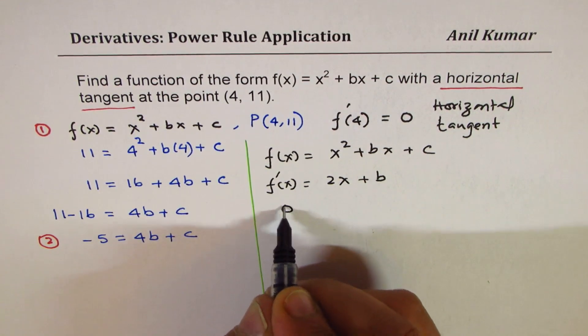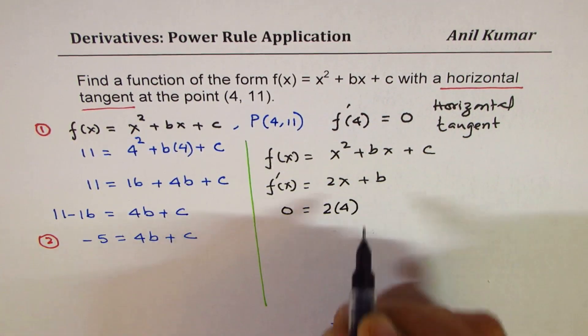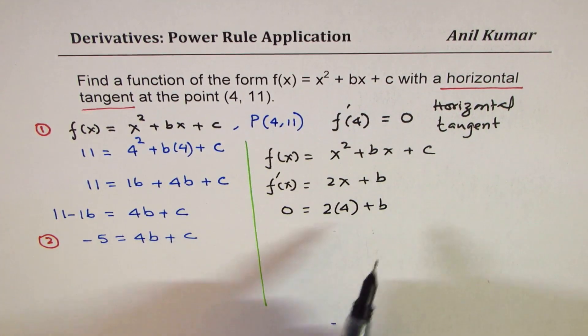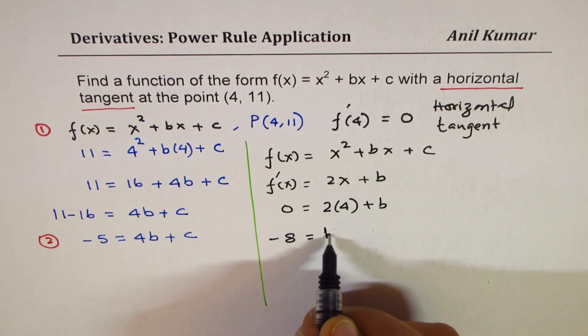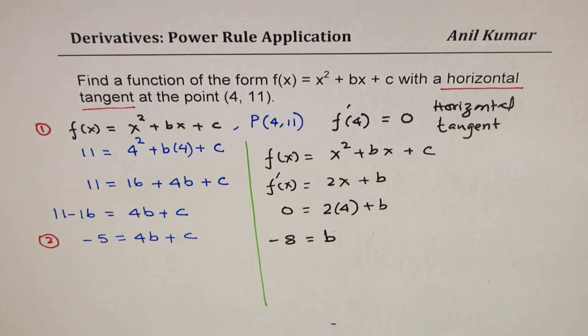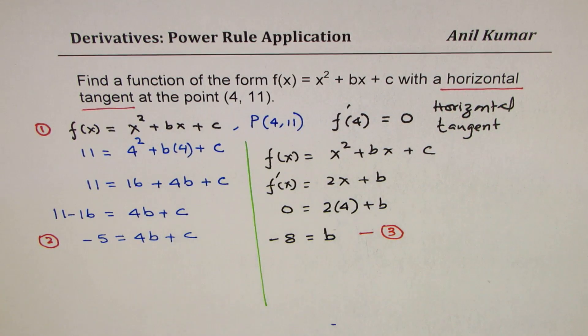That means this value is 0 for x = 4. That means 2(4) + b. From here, you can find the value of b, which is -8. So -8 becomes the value of b. Once you know b, so we found the derivative and we got the value of b, we will call this as equation 3.